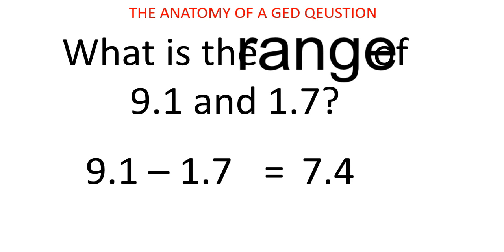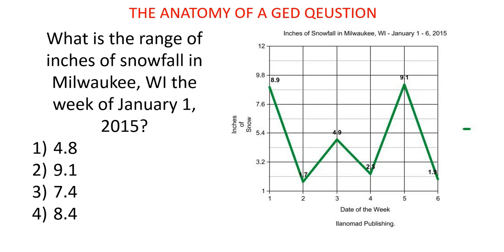Now I'm going to introduce a graphic. Instead of giving you numbers directly, I'm asking: what is the range of inches of snowfall in Milwaukee, Wisconsin, the week of January 1st, 2015? You see a chart, and you have to pick out the concept of range and extract data from it. My mouse shows 9.1 as the high point and 1.7 as the low point, and then you do that same basic math. It's not just 9.1 minus 1.7 — it's understanding the concept of range and working with the data presented.